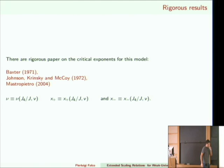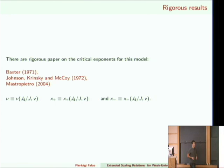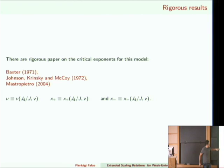The reason universality is important is that, for example, the XY model in three dimensions has critical exponents that are just numbers, and because of universality they agree exactly with the critical exponents measured in real liquid helium experiments. The numbers match with great significance. In two dimensions, at least for these models, you cannot do this because the exponents are functions rather than numbers.